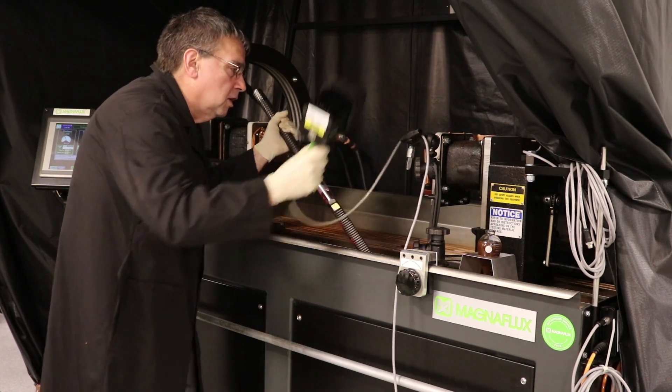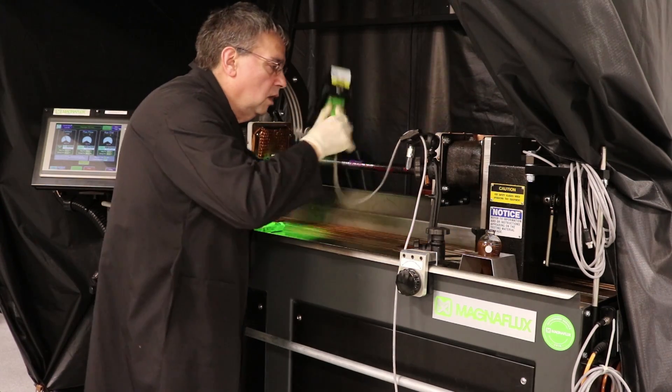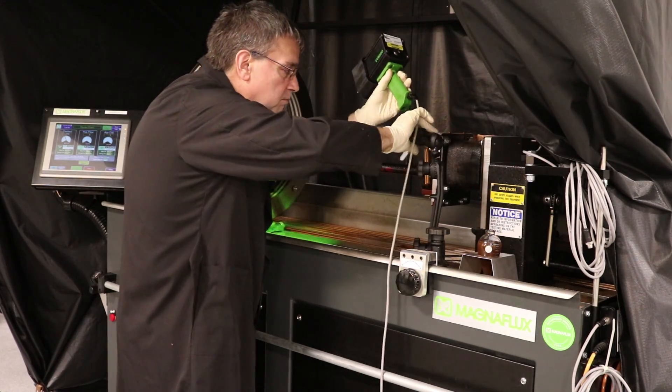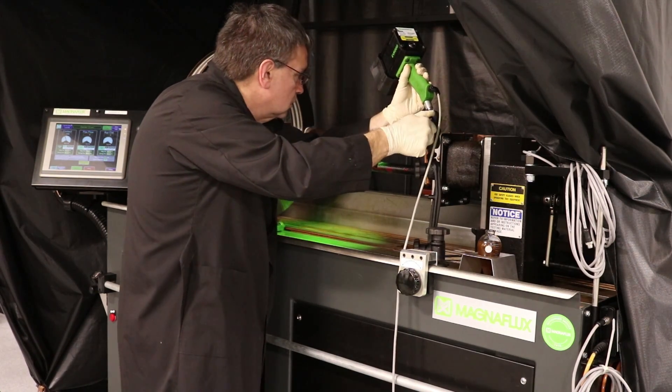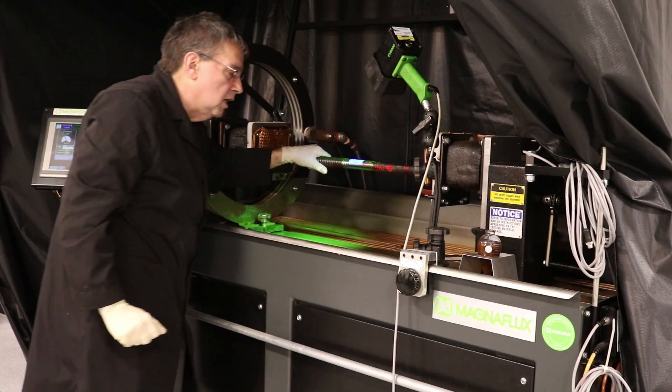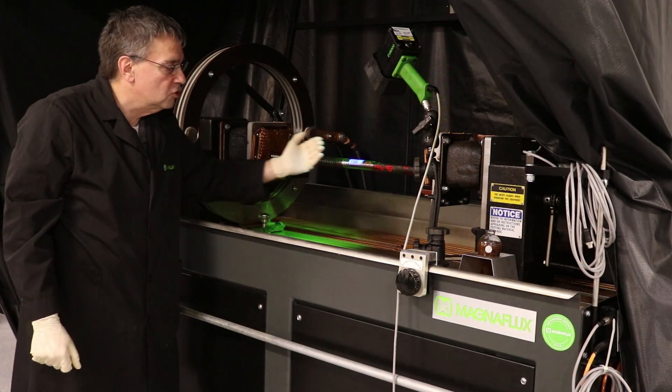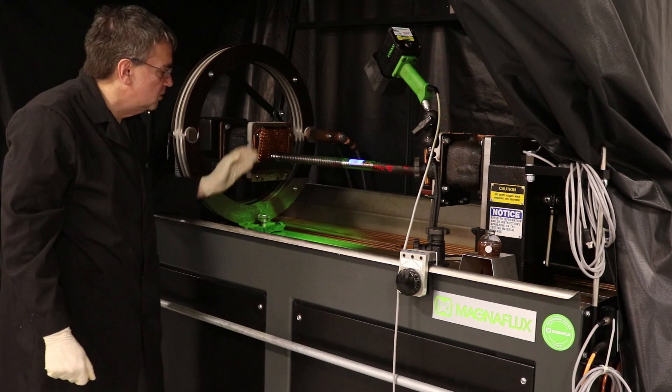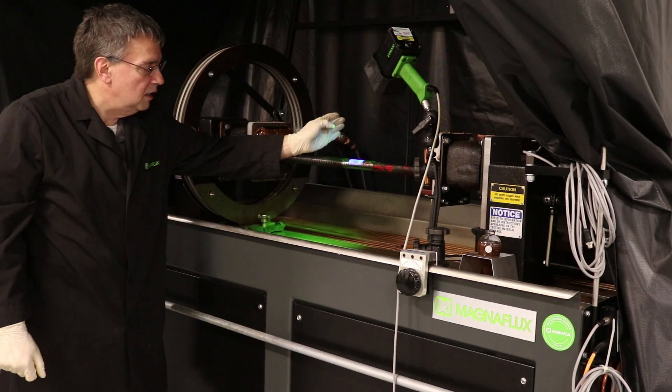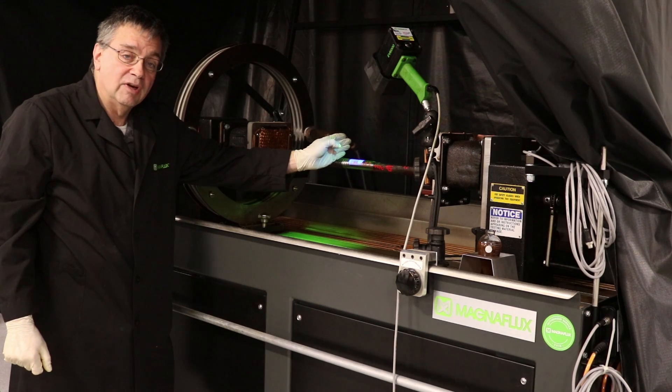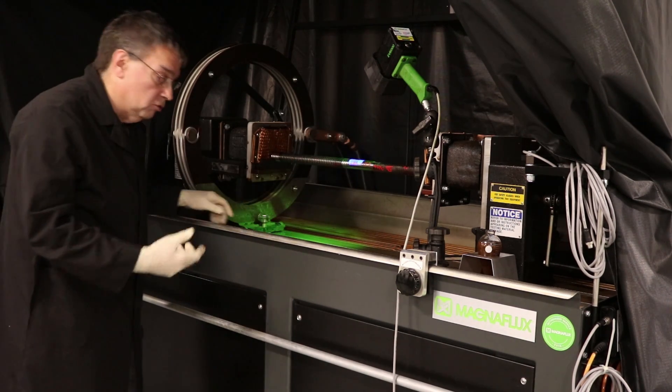Once that inspection is done, you can place the part back and bring the coil over into position. The rule of thumb to remember is, on a contact shot, you will see indications in the direction of the magnetic current flow. In this case, it's going from the headstock to the tailstock. But you will not see indications that are exactly 90 degrees perpendicular to that current flow. This is why we have the coil shot.